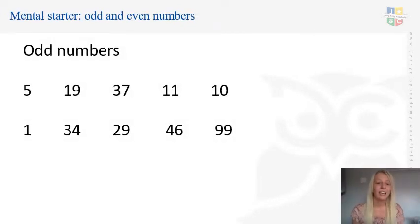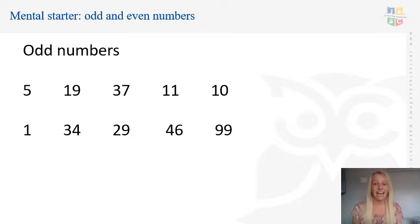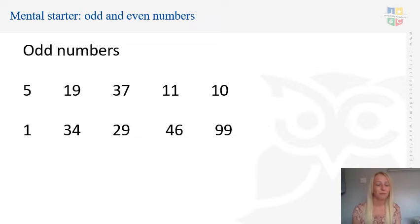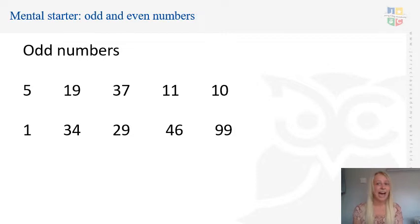For today's starter, we are going to be focusing on odd numbers — numbers that are not a multiple of 2, like 1, 3, 5, 7, and 9. We have a group of odd numbers in any order, and your challenge is to find the sneaky even numbers that have snuck in. You can circle or write down the even numbers that are hiding. Pause the video now and see if you can find the numbers that are not odd — the ones that are even.